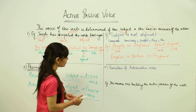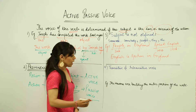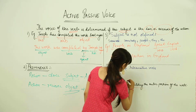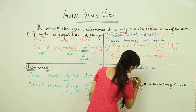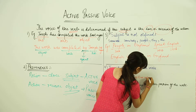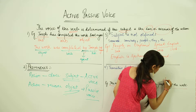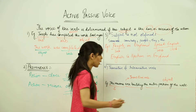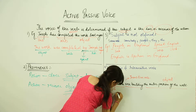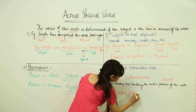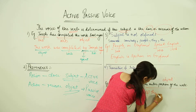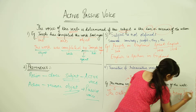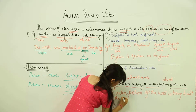For example: 'The masons are building the outer portion of the wall.' Here the masons is the subject, are building is a transitive verb, and the outer portion of the wall is the object. So this active voice sentence can be converted to passive voice. The passive form is: 'The outer portion of the wall is being built by the masons.'